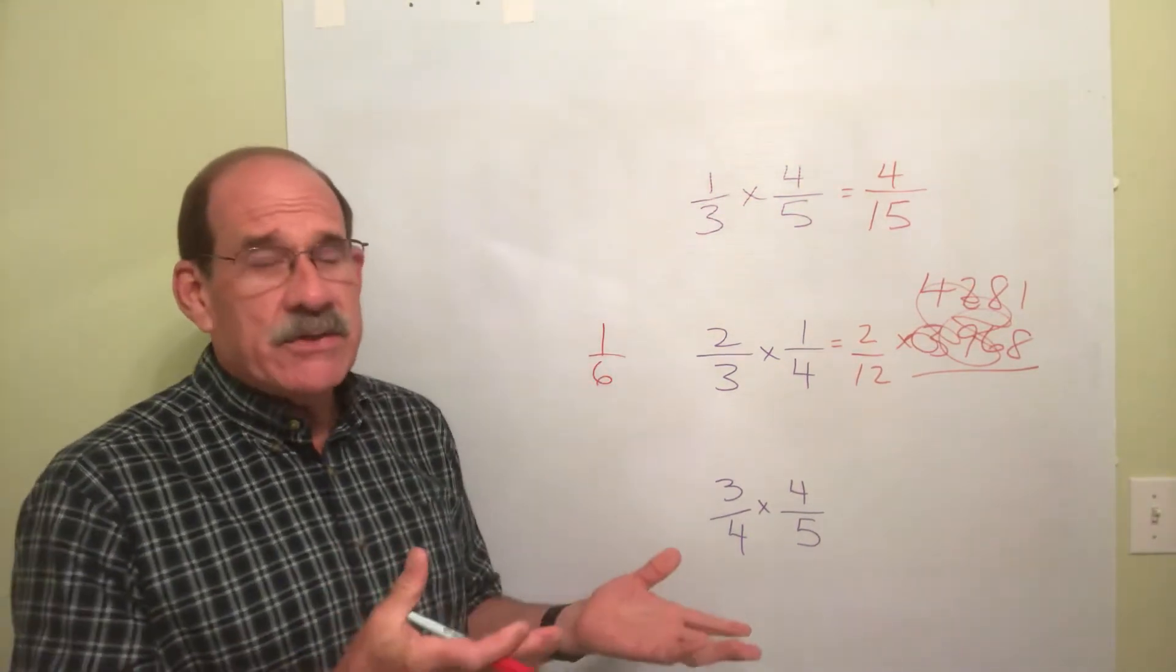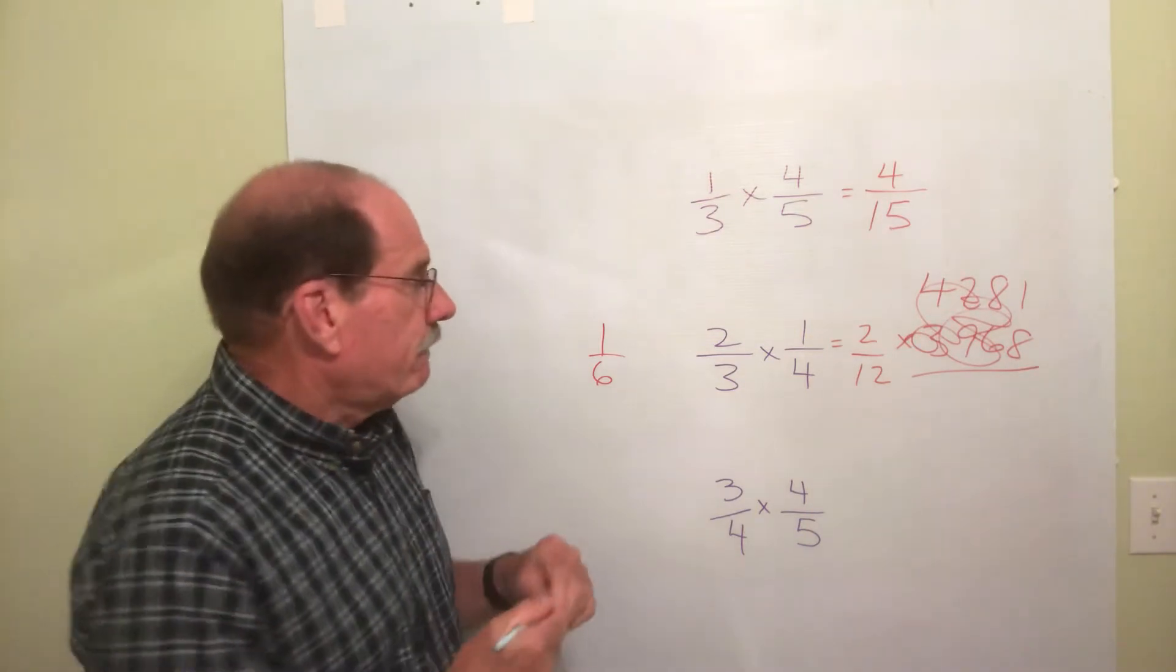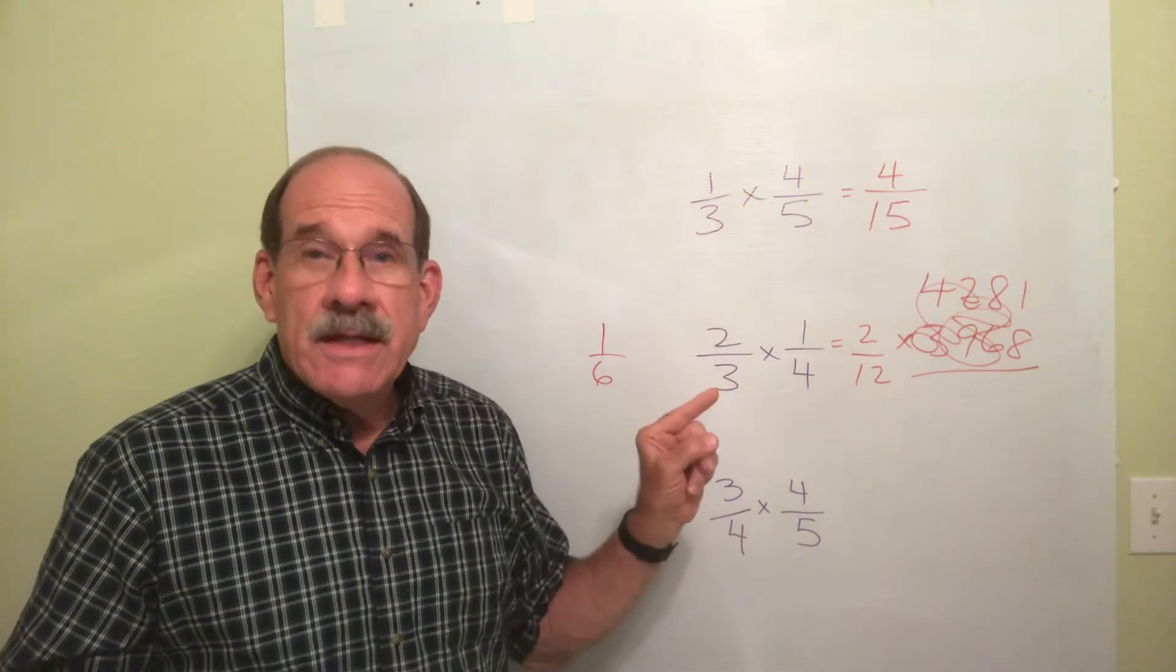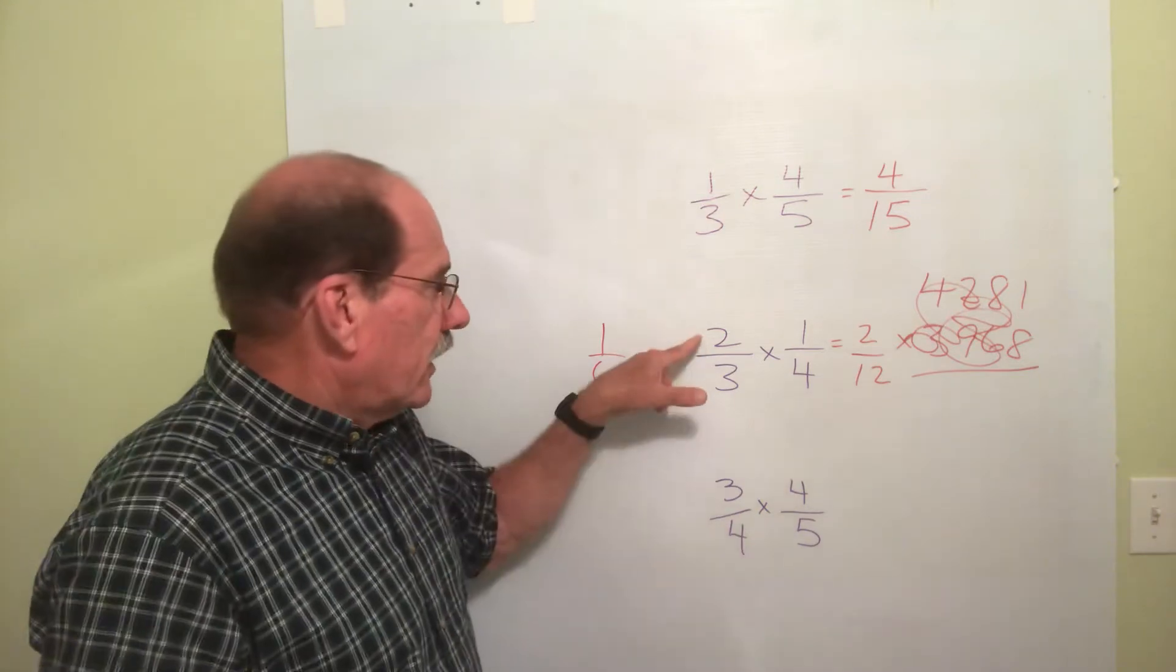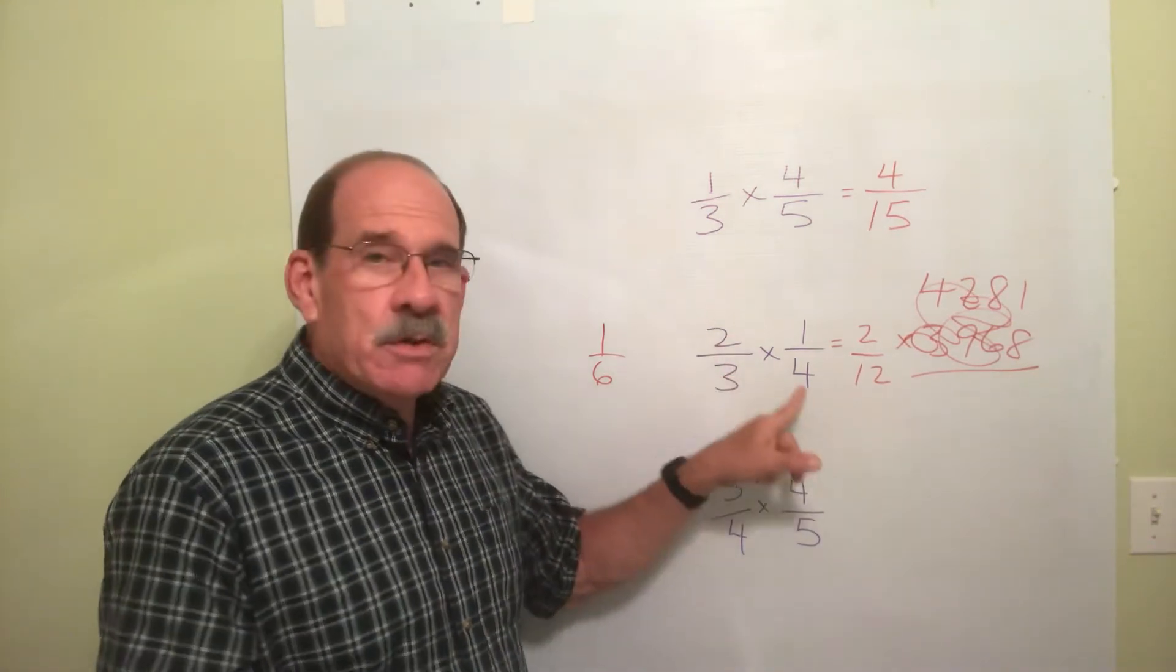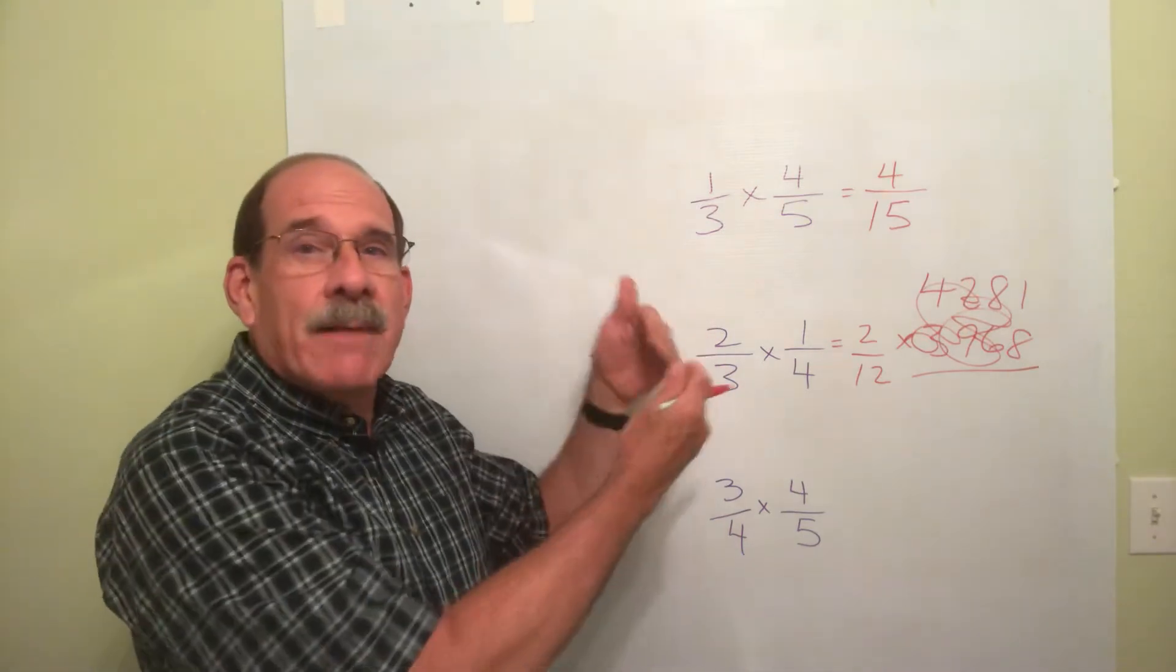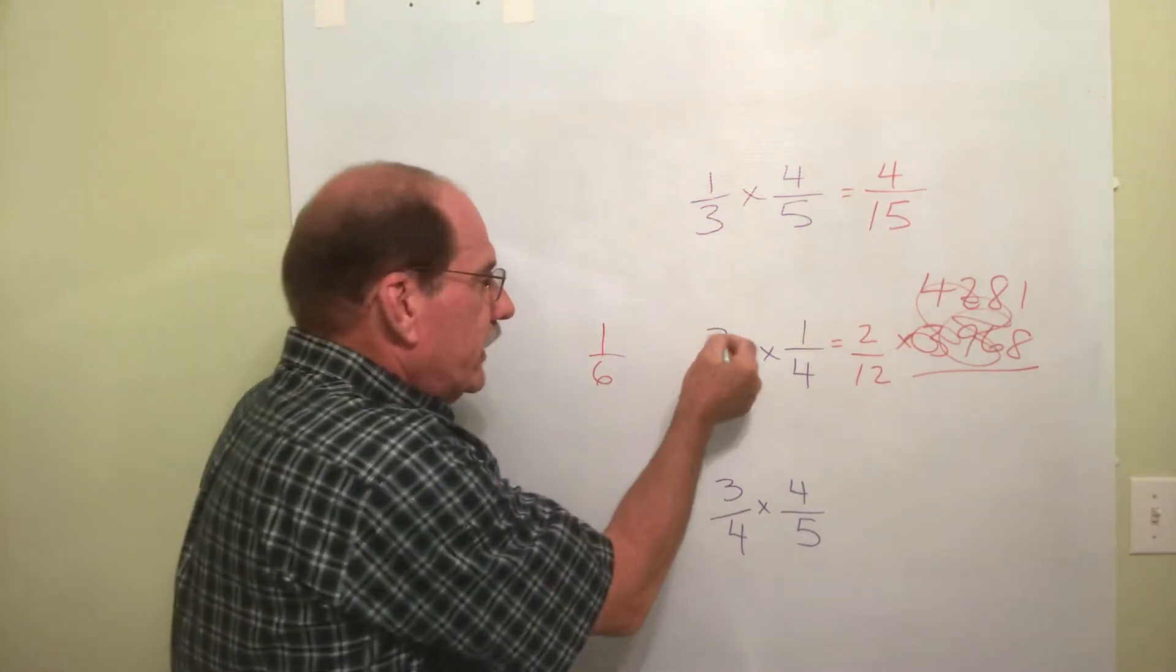But now, notice something. This next thing, if you catch on to this, will save you a lot of time and effort and aggravation and frustration. Before we multiply, notice something. What's so nice also about multiplying fractions. Any number on the top, if there's something in common with any other number on the bottom, we can divide the same thing. In other words, look, there's a 2 up here on this fraction. There's a 4 on the bottom of the other fraction. But both the 2 and the 4 can be divided by 2, can't they? Yes, they can. So, if we, before we multiply, let's do that. Let's divide, although they're on opposite fractions. This is on this one, that's on this one. It's okay.